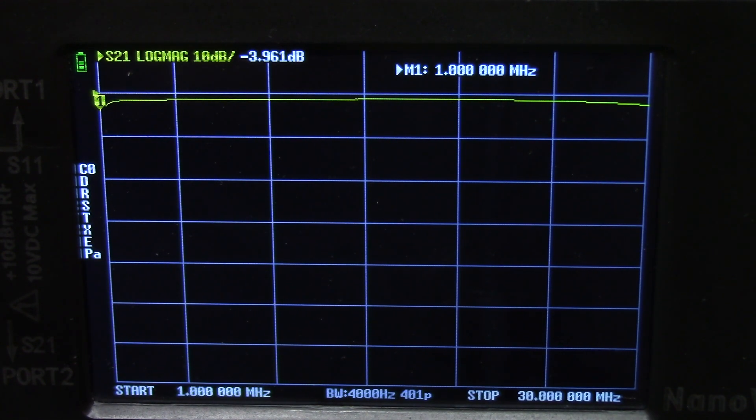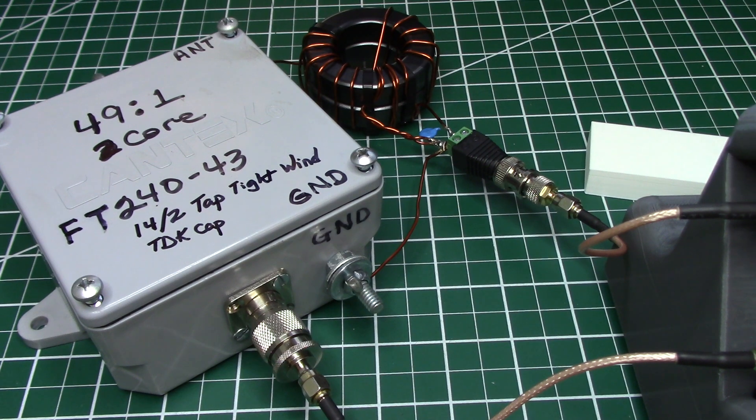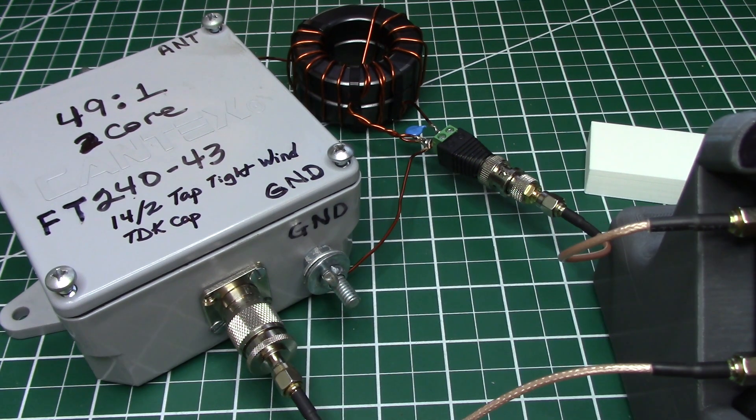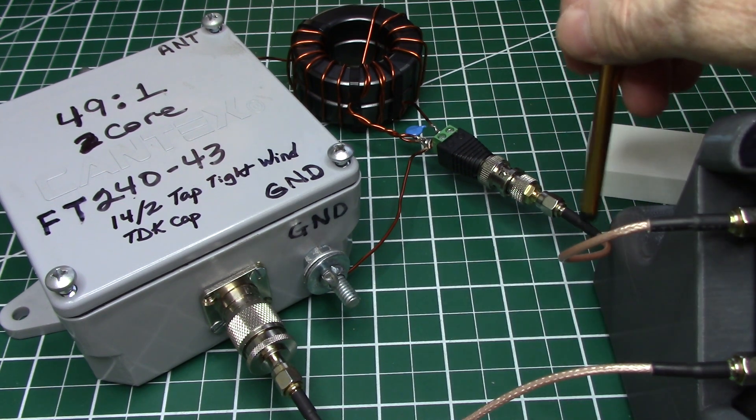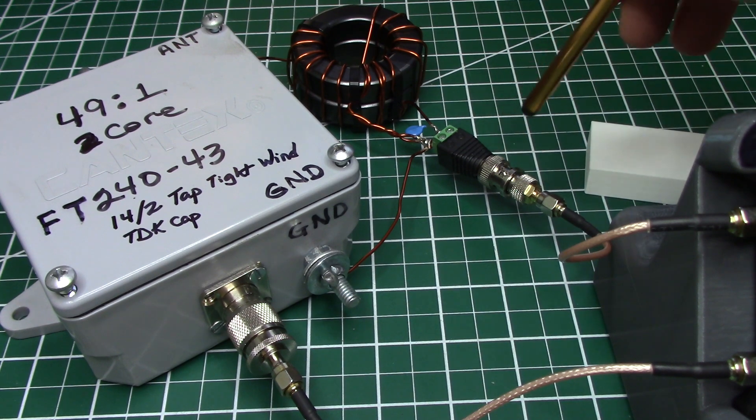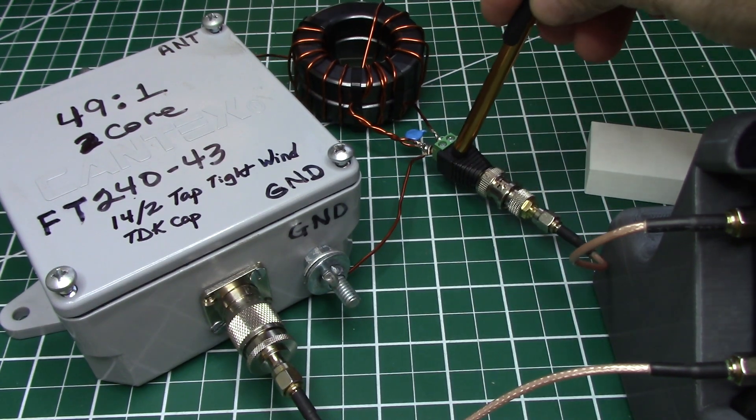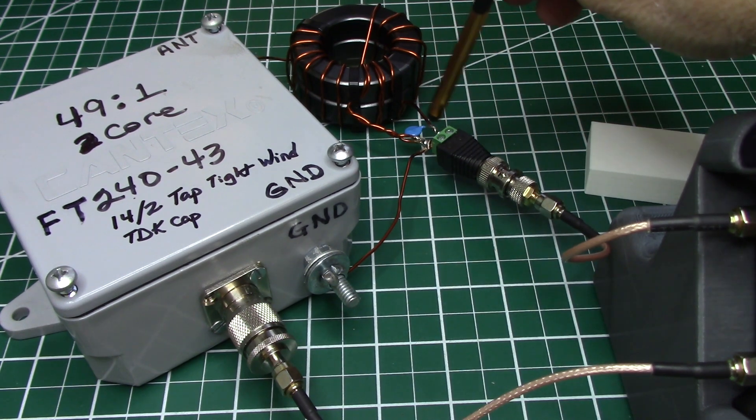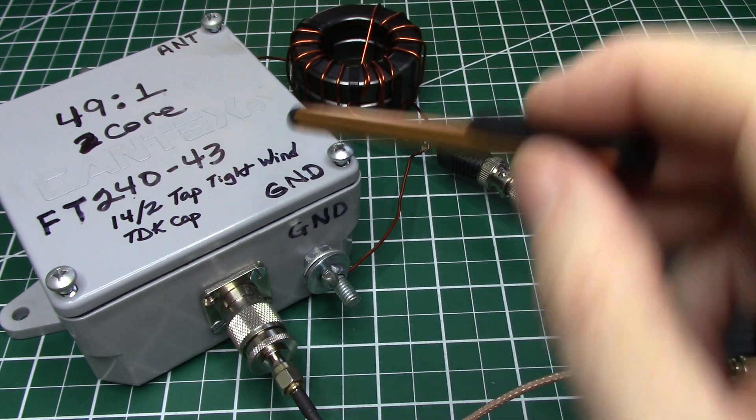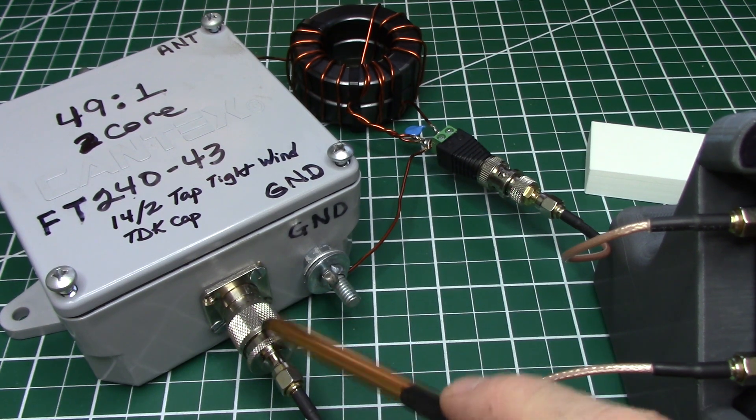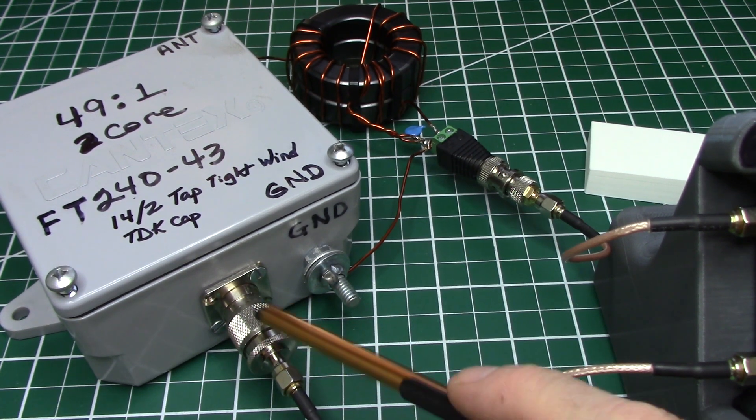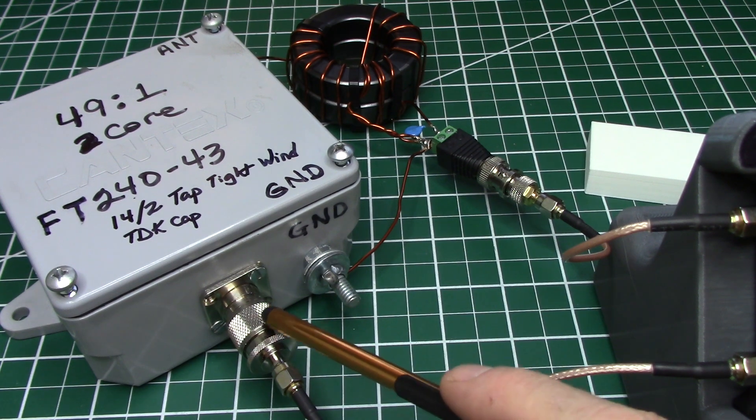And we're going to use the same setup that we have to measure the insertion loss on our transformers that we've been building. And that's this setup here which is we've got the signal coming out from port one that will go into our first transformer. And depending on the state of your current transformer you may need one of these breakouts where you can put in two different leads here or you may even have to use a PL259 or SO239 connector as we have here.